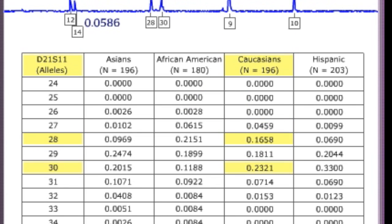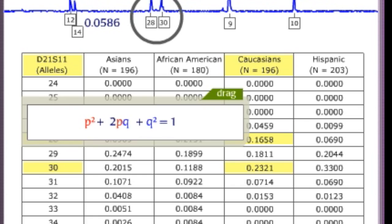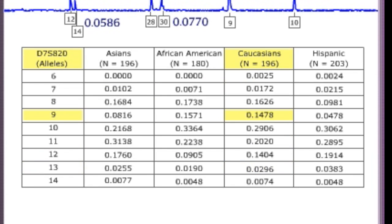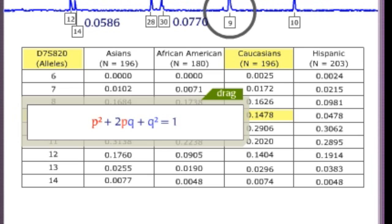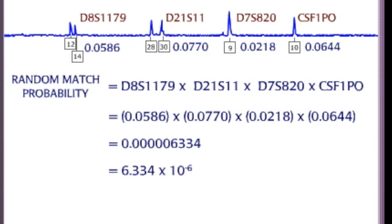Similarly, the frequency can be calculated for D21S11. Again, using the Hardy-Weinberg equation, let's calculate the frequency of a Caucasian being homozygous for D7S820 for allele 9. Similarly, the calculations can be done for CSF1PO.